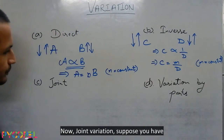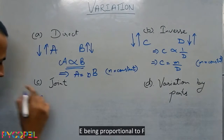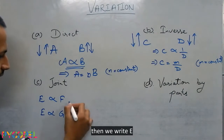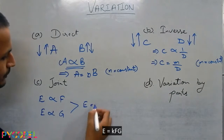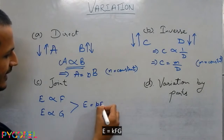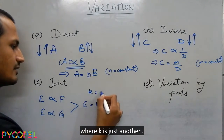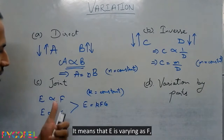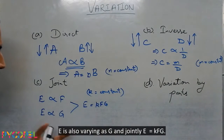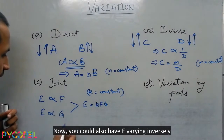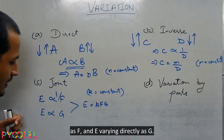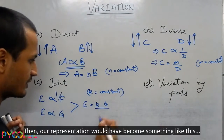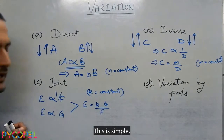Now, joint variation. Suppose E is proportional to F and E is also proportional to G. Then we write E = KFG, where K is just another constant. This is joint variation — it means E is varying as F, E is also varying as G, and jointly E = KFG. You could also have E varying inversely as F and E varying directly as G, in which case the representation changes accordingly.